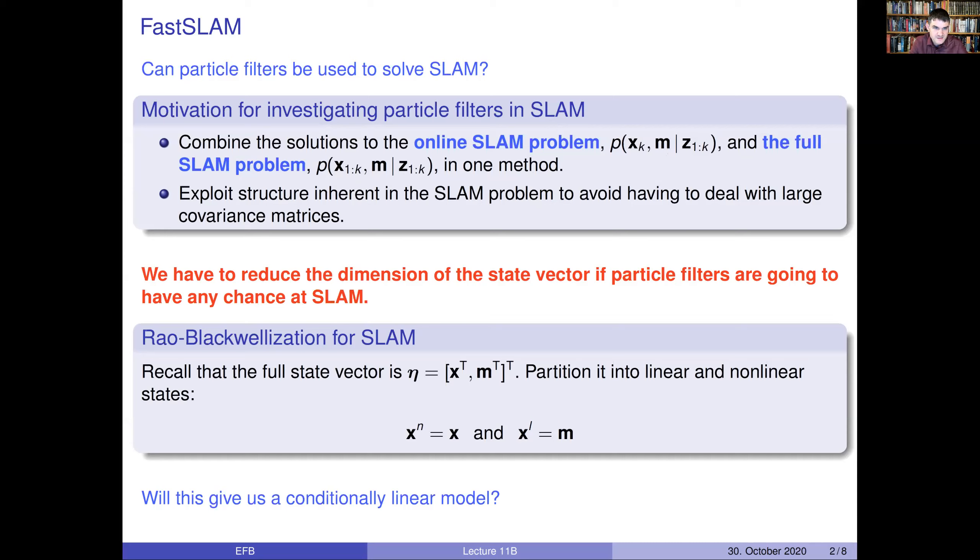FastSLAM is, in a sense, the only method that is able to combine both of these in one method because of the fundamental structure of a particle filter, how a particle filter always samples trajectories. You might forget about the trajectories. You typically do that, but in reality, it does sample a full trajectory. So, in a sense, you have a solution to both those SLAM problems.